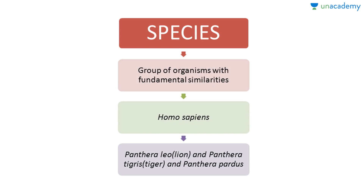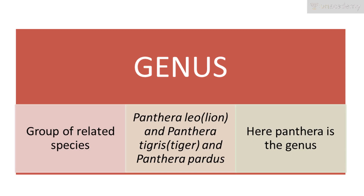We see examples like Panthera leo (lion), Panthera tigris (tiger), and Panthera pardus (leopard). Genus is a group of related species. In this example, leo, tigris, and pardus are species belonging to the genus Panthera.